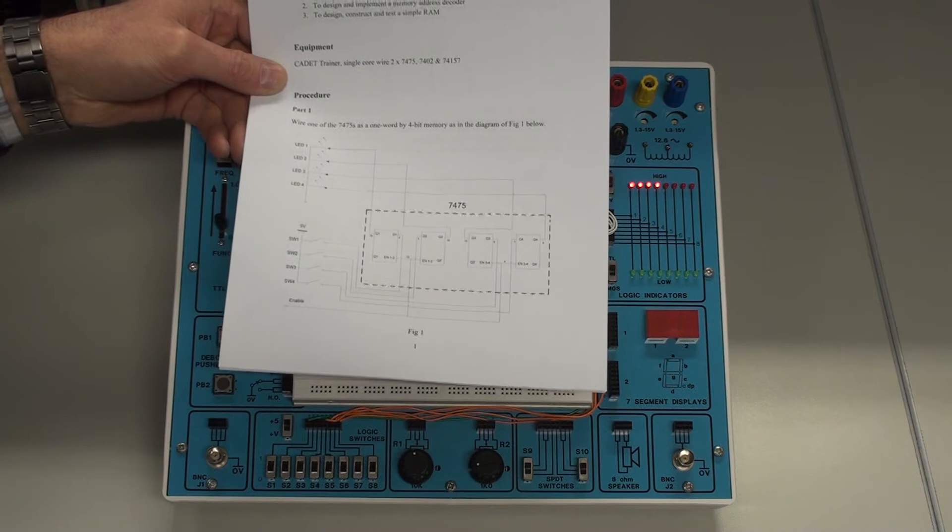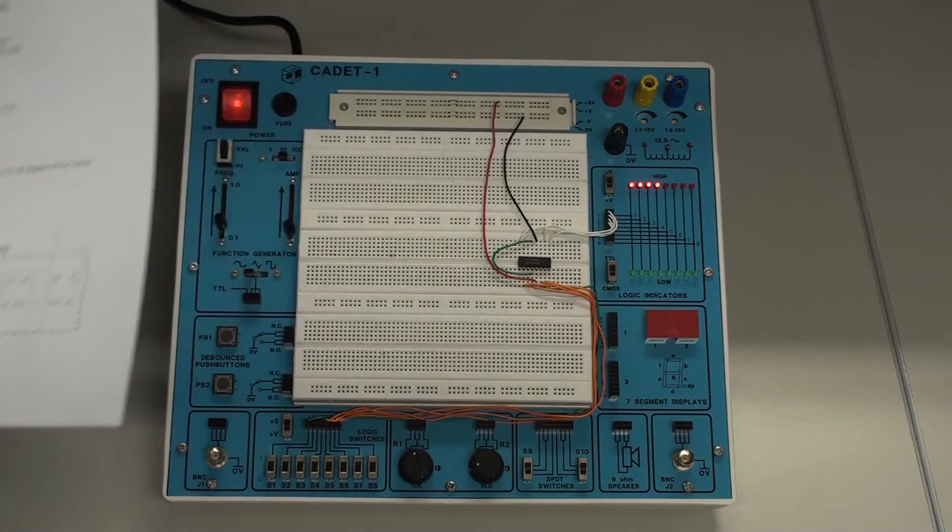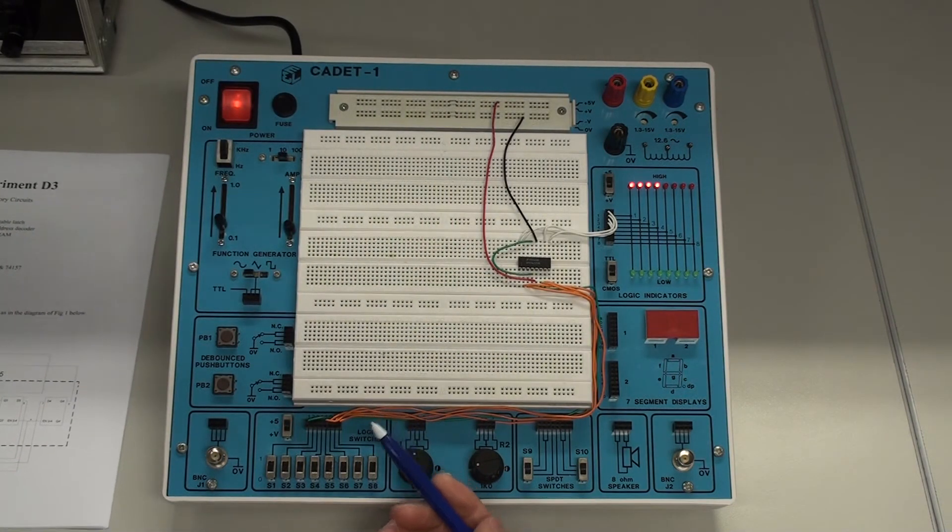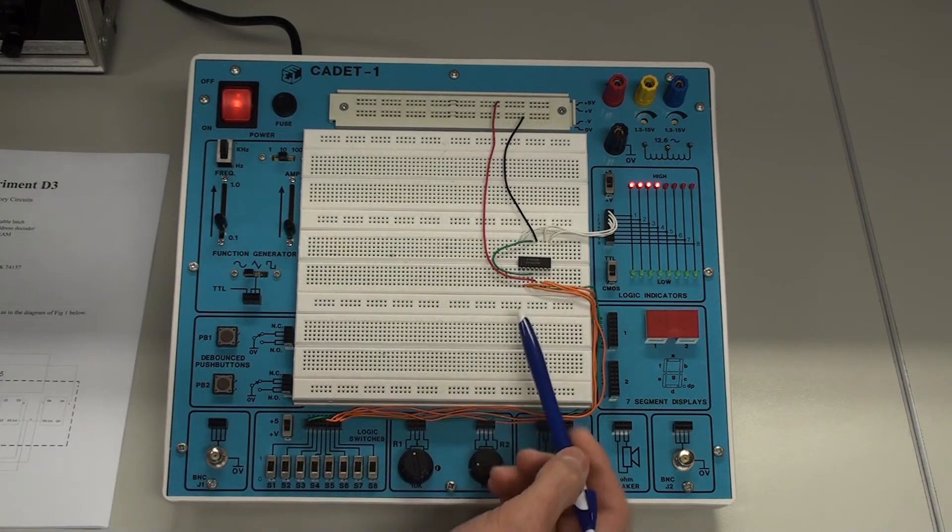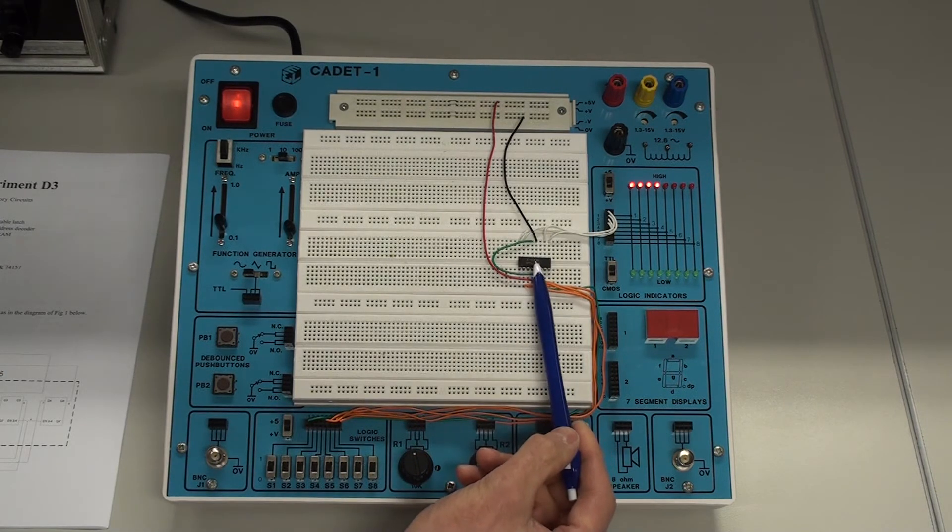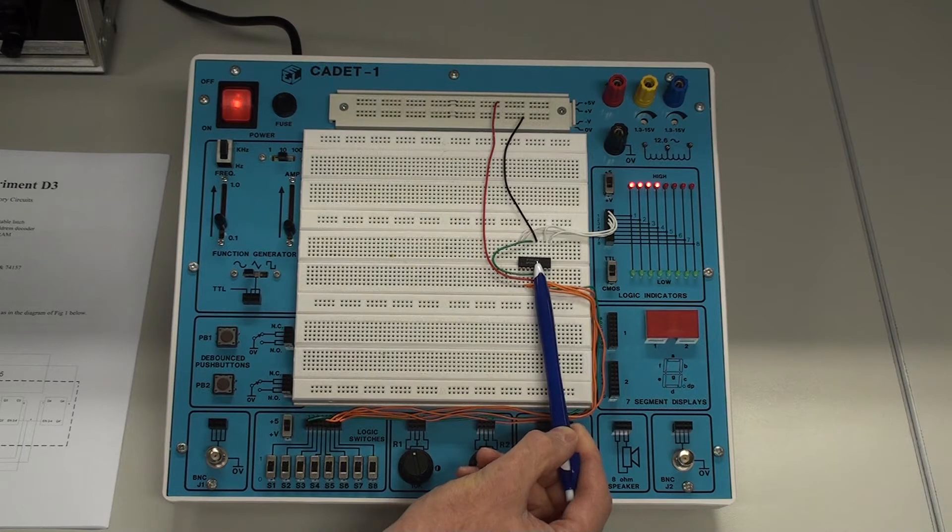So that's the basic setup there. And this is it actually connected up. Here we have the 7475 chip, the D-type latch.